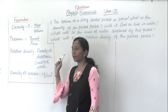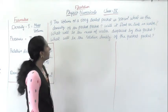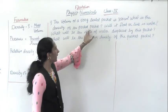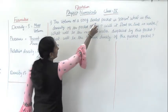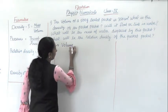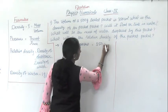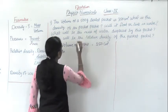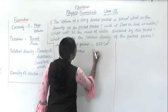These are the formulas we are going to use for the numericals. The question is: the volume of a 500 gram sealed packet is 350 centimeter cube. What is the density of the packet? First we will see the given part — what things are given. Volume of the sealed packet is 350 centimeter cube, and mass of the packet is 500 gram.